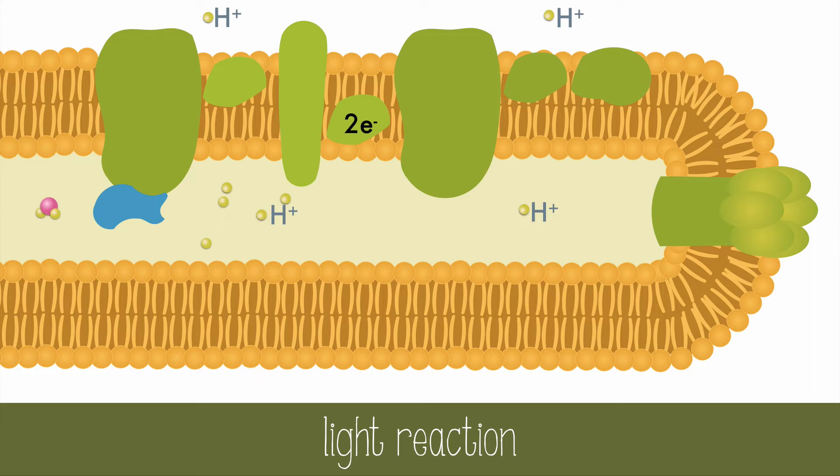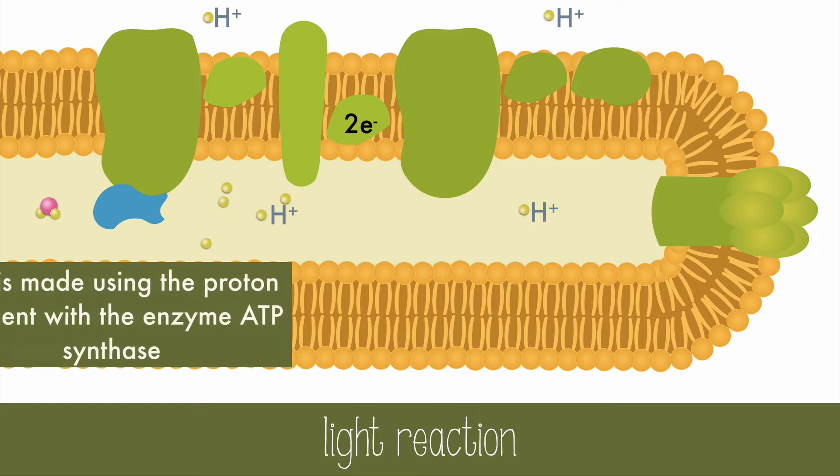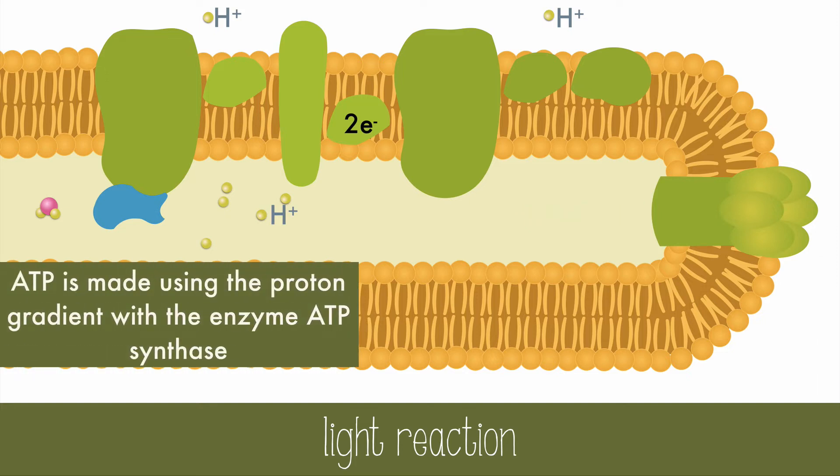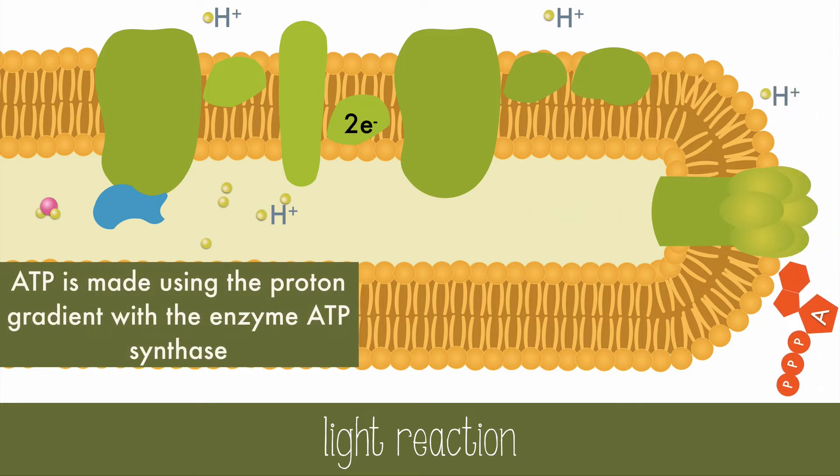The protons can exit the thylakoid space through ATP synthase. As they move through ATP synthase, ADP is phosphorylated to make ATP, which can be used in the light-independent reactions. This step in photosynthesis is very similar to the chemiosmosis process in cellular respiration.